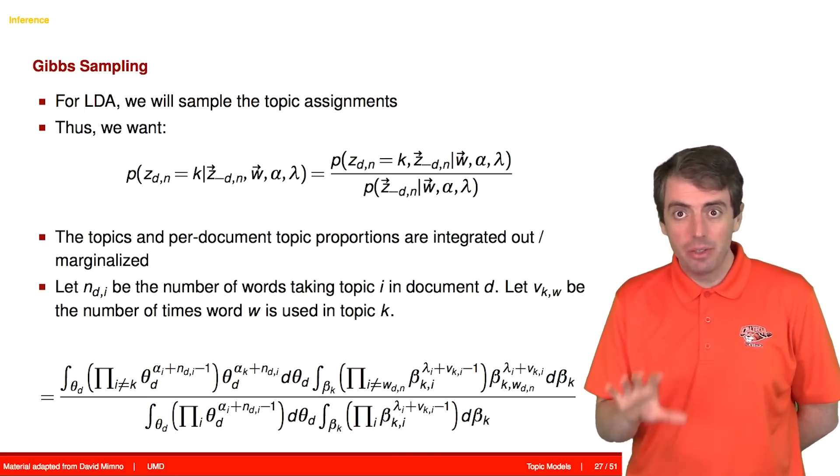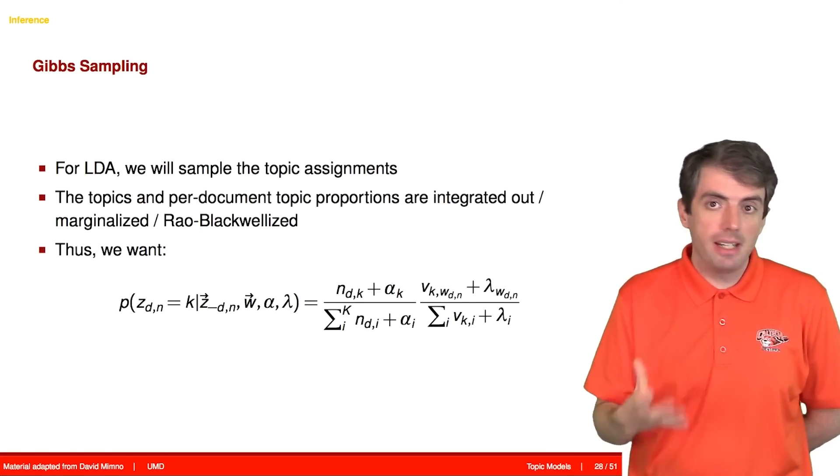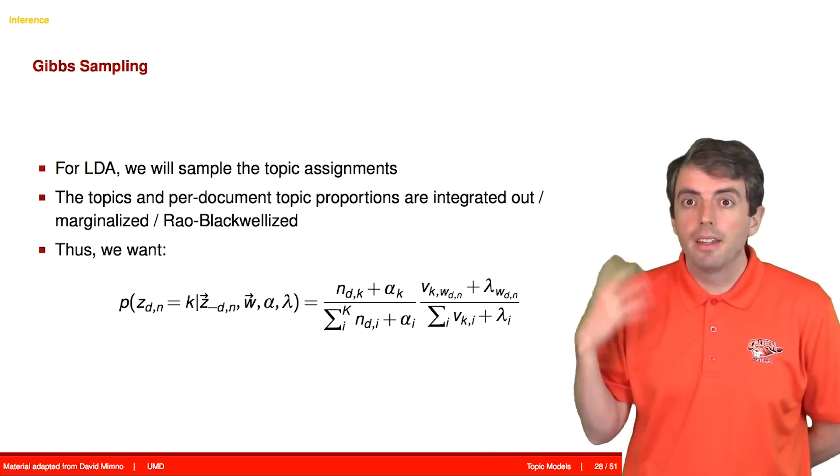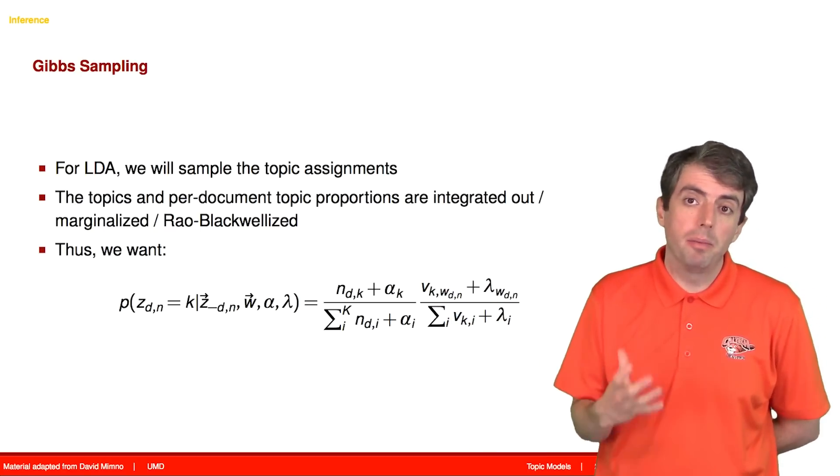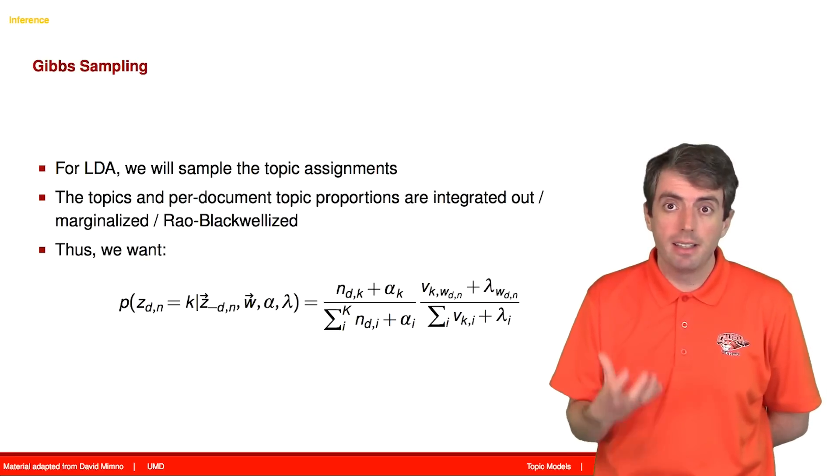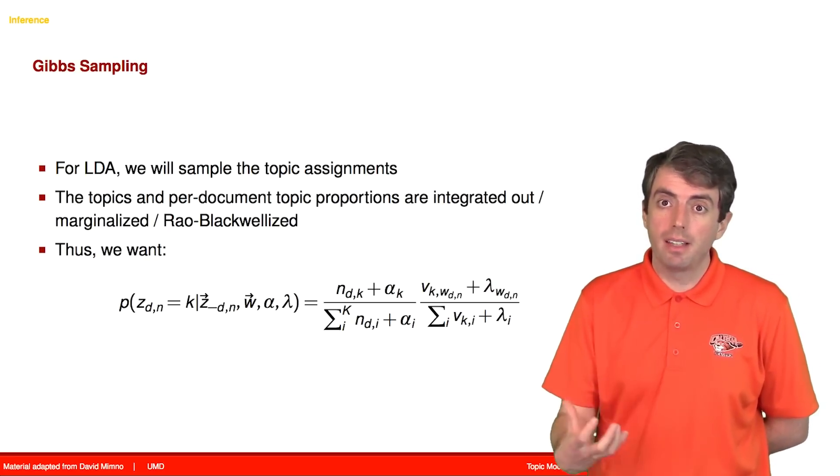So if you actually do the integration, you get a conditional probability expression that looks something like this. There are two main parts to this conditional probability. The first part says how much each document likes a topic. And the second part is how much each topic likes a word.